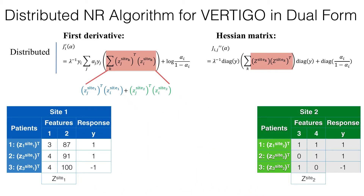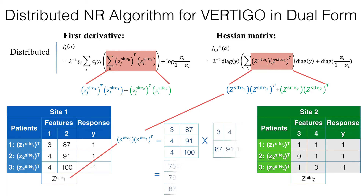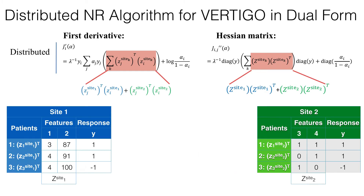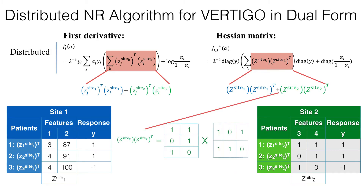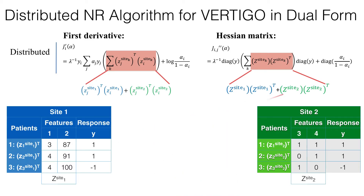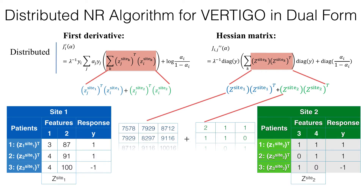For the Hessian matrix update, we can also compute and only exchange site-wise local statistics. For example, the computation for site 1 is illustrated as follows, which only requires local matrix multiplication. Similarly, for site 2, we can compute the local statistics as follows. Finally, we can aggregate the local statistics from sites 1 and 2 to update the global model, without sharing patient-level data.